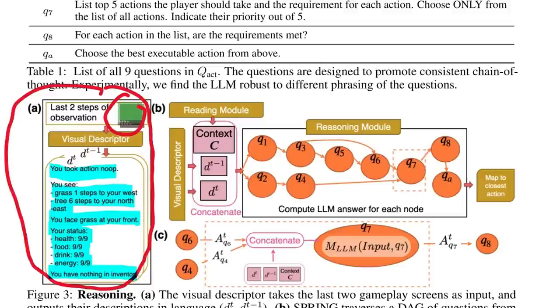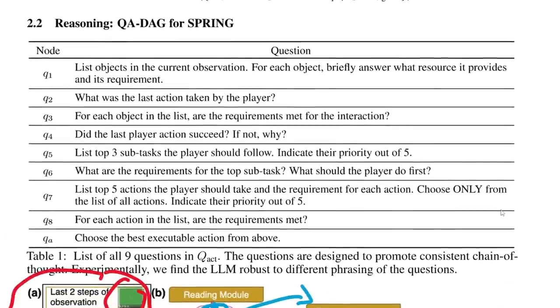And now that we get into the final step of this method, we're going to use this visual description along with the previous context vector, throw those all together into one long string, pass them into this reasoning module. The reasoning module is a graph of several connected nodes where each one of these nodes corresponds to one of these prompts. For example, we have the question Q1, or the prompt, list objects in the current observation. For each object, briefly answer what resource it provides and its requirements. And that prompt is what is asked in this Q1 node right here.